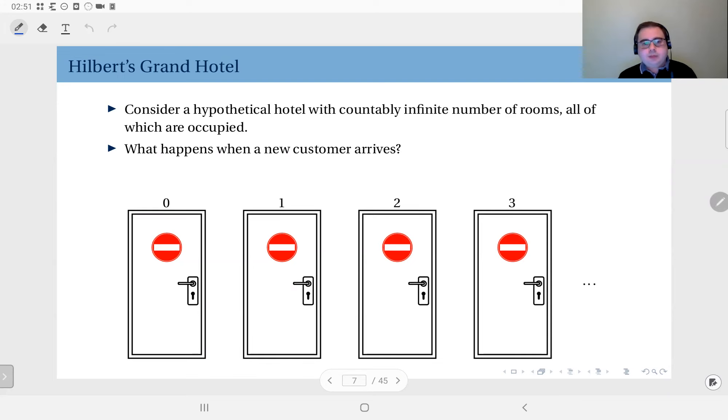Now, think about what happens when a new customer arrives. The hotel is all occupied. But since this is an infinite hotel, for any number you give me, let's say I have numbered the rooms, because it's countably infinite, I can number them using natural numbers. So, any natural number you give me, there is a preceding number in still the set of natural numbers. The successor of that number is also a natural number.